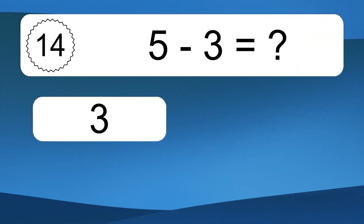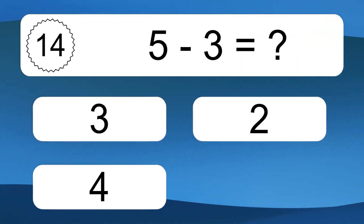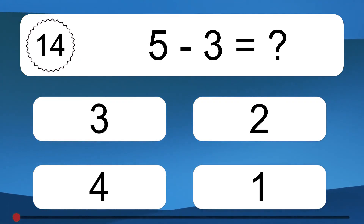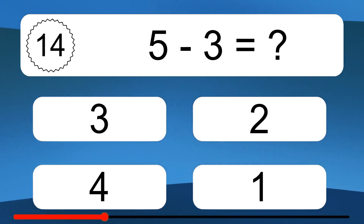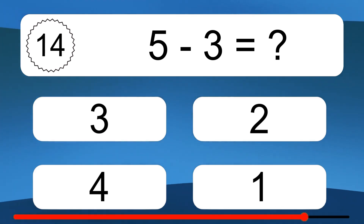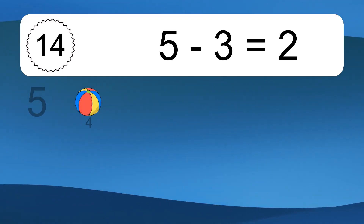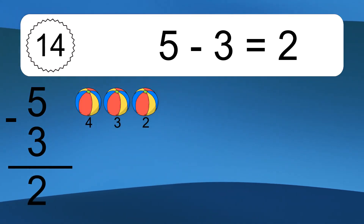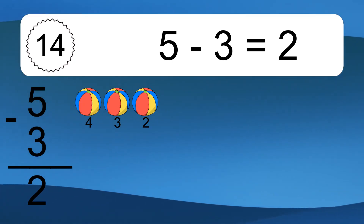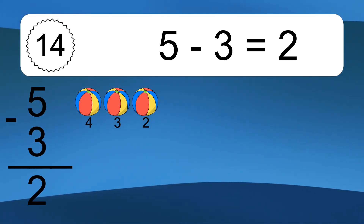5 minus 3 equals what? 5 minus 3 equals 2. Let's count it: 4, 3, 2.